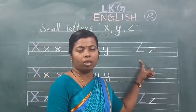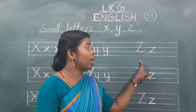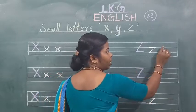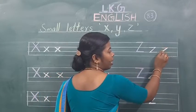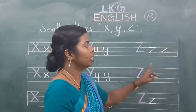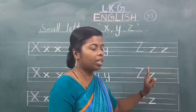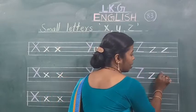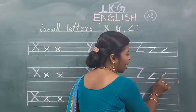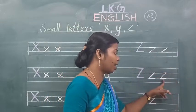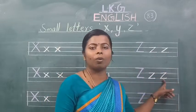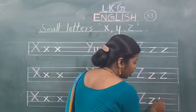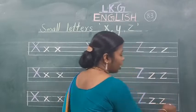Z. Sleeping line, slanting line, again sleeping line. This is small letter Z. Sleeping line, slanting line, again one more sleeping line. This is small letter Z.